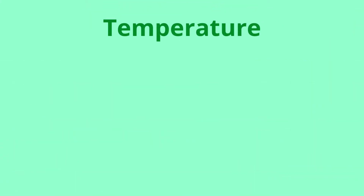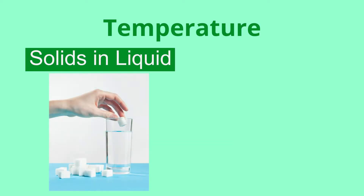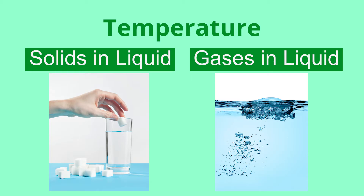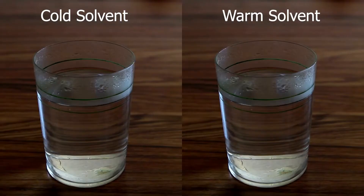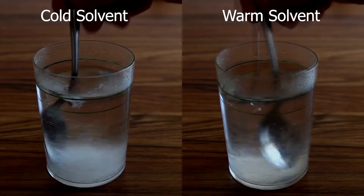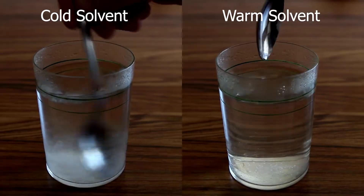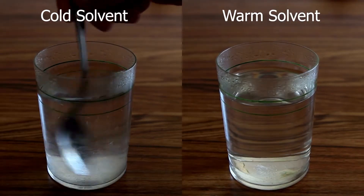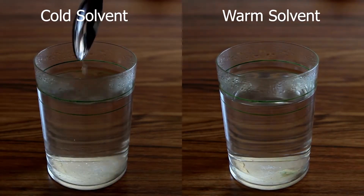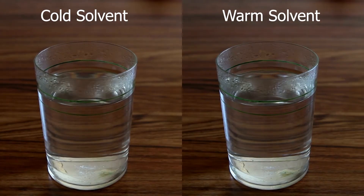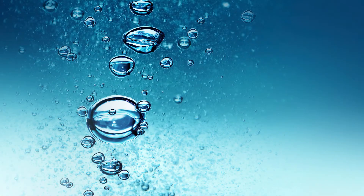Temperature affects the solubility of two types of solutions: solids dissolved in liquids, and gases dissolved in liquids. The solubility of solid salt in liquid increases with temperature. If you dissolve the same amount of salt in warm and cold water, you will see that the salt in warm water dissolves better than in cold water.